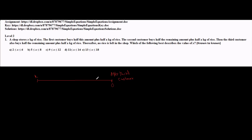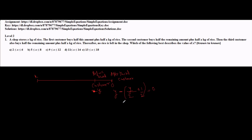We know that after the third customer the quantity is 0, because no rice is left. So what is the quantity before the third customer? Let's call it Y — not X since we already have that variable. Out of Y, half was purchased plus half a kg by the third customer. So Y minus (Y/2 plus 1/2) equals 0, giving Y/2 minus 1/2 equals 0. This implies Y equals 1. So before the third customer, the quantity was 1 kg.